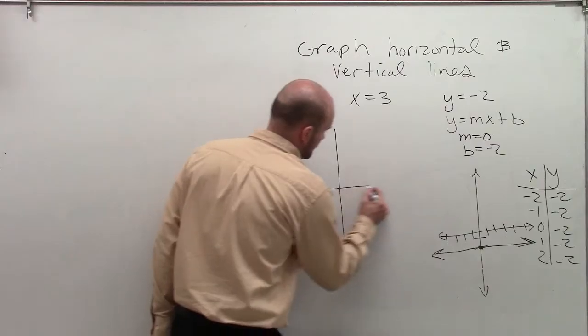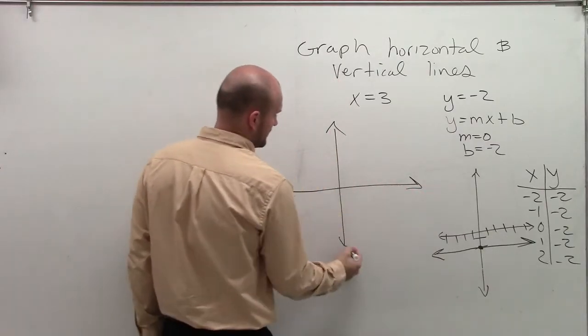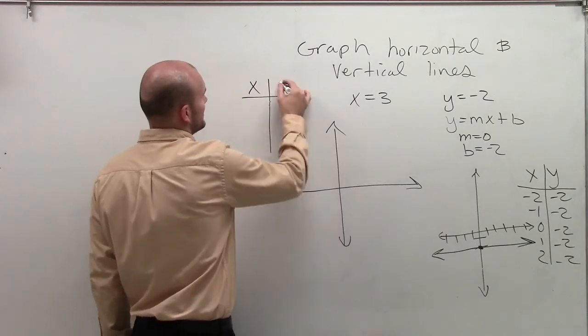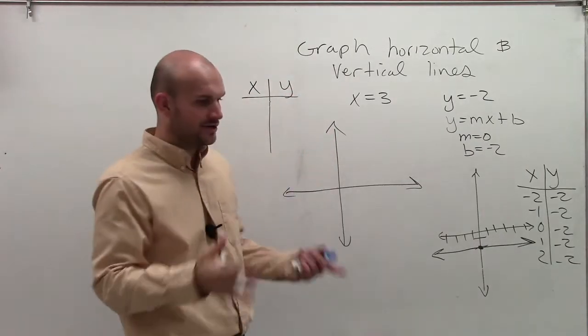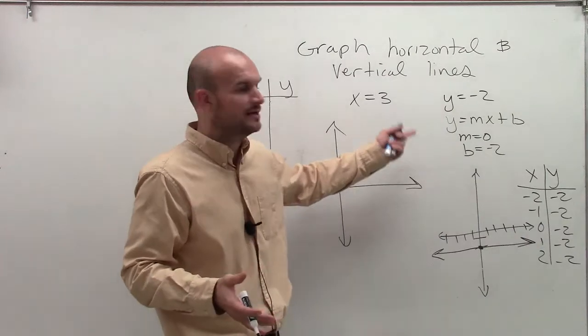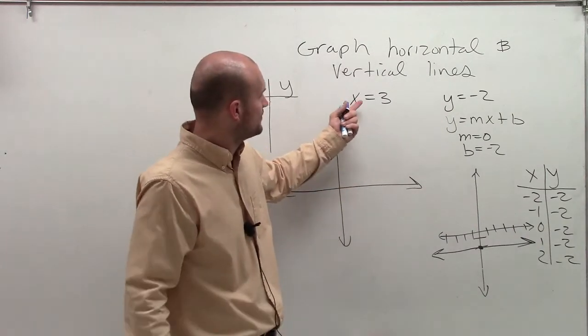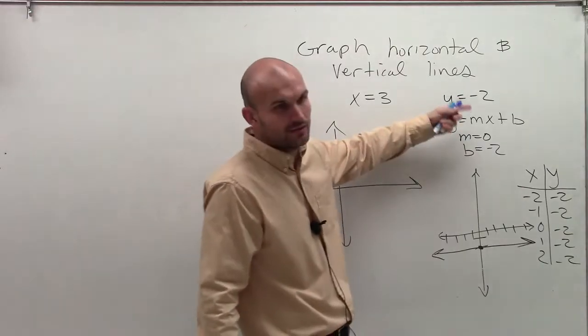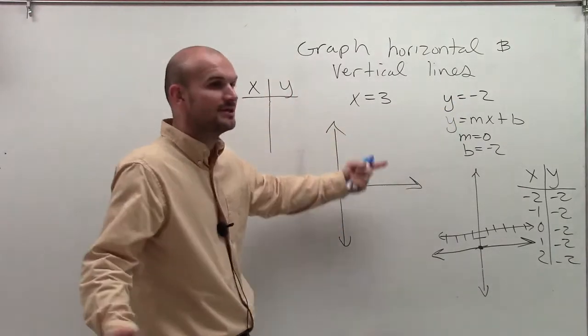So let's talk about this one. For this graph, you can see the table of values, it's going to be the same thing. Now here, we don't have a linear equation because we don't have a y, we don't have our y equals, we don't have a y and an x, so we're not going to have a linear equation.